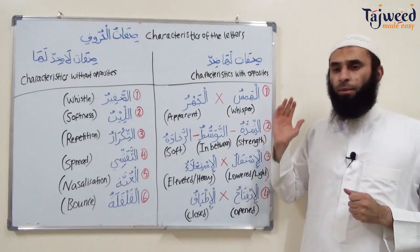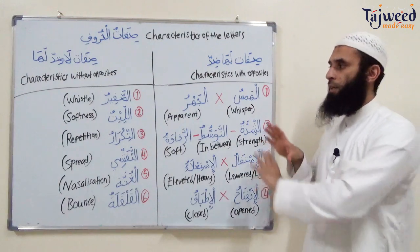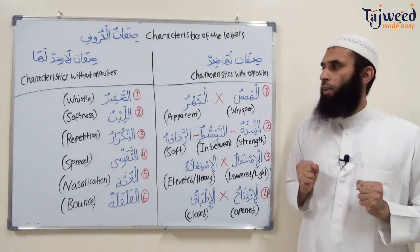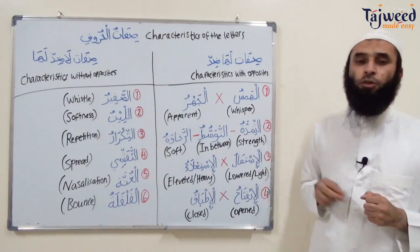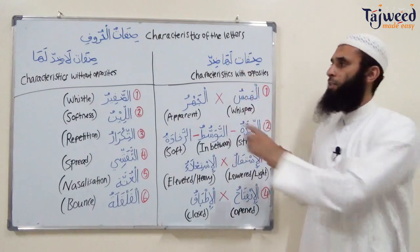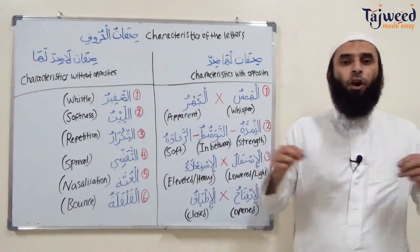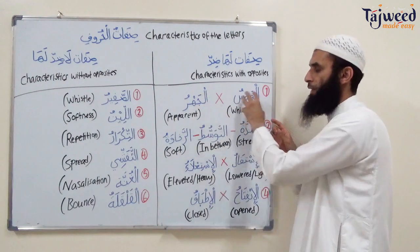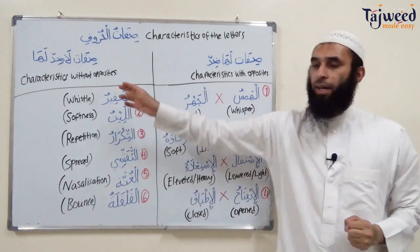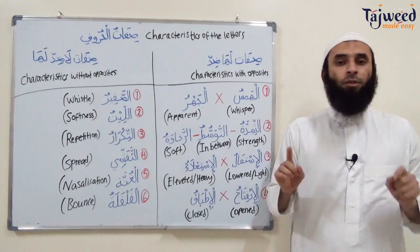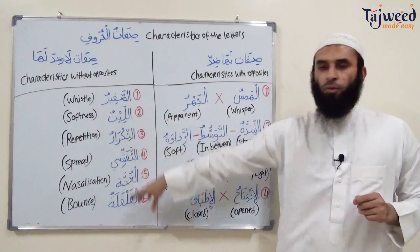Now on the board here, we have Sifat al-Huruf. We're going to summarize and have a general overview of what Sifat al-Huruf is, inshallah. We have two groups. The first is Sifat Lahadid — characteristics that have opposites. These come in pairs, and the group of letters will be opposite to other groups. The second is Sifat Laadid — characteristics that do not have opposites. These groups just come individually.